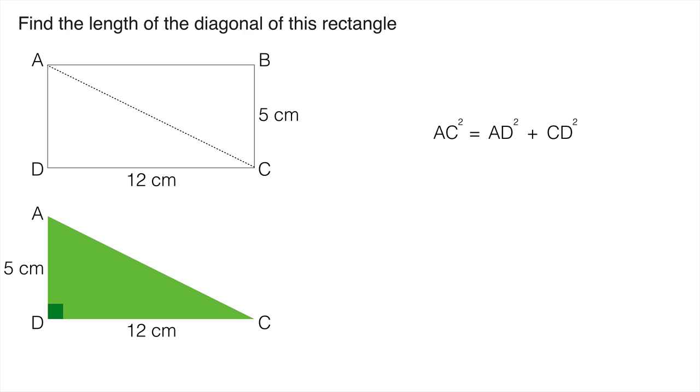So now that we have this little formula here we can make some substitutions. The first one for AD and the second one for CD. And we get AC squared equals 5 squared plus 12 squared.